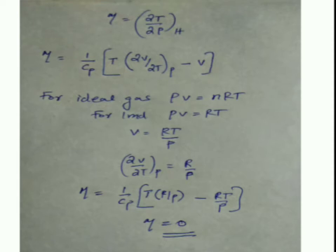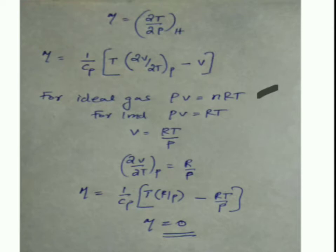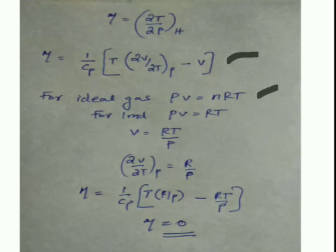The equation is: μ = (1/Cₚ)[T(∂V/∂T)ₚ − V]. For an ideal gas, PV = nRT, so for one mole, V = RT/P. Taking the partial derivative: (∂V/∂T)ₚ = R/P. Substituting into the equation: μ = (1/Cₚ)[T·(R/P) − RT/P] = (1/Cₚ)[RT/P − RT/P].